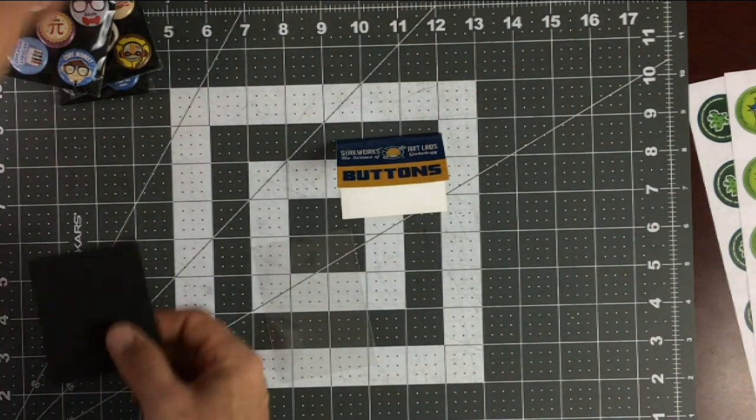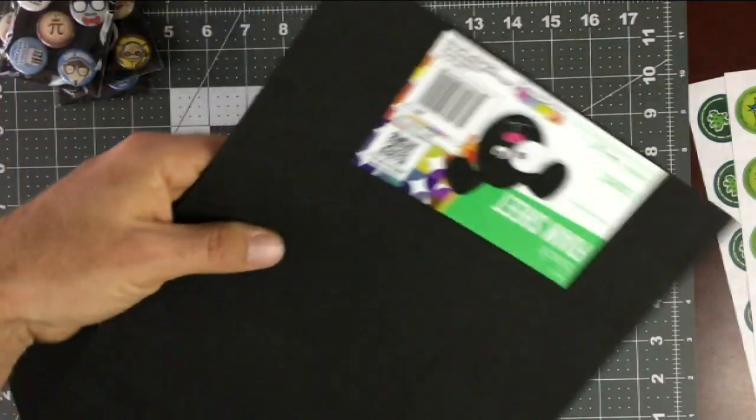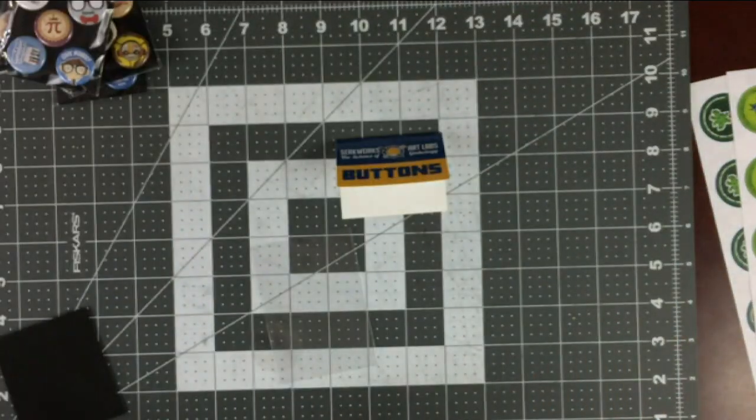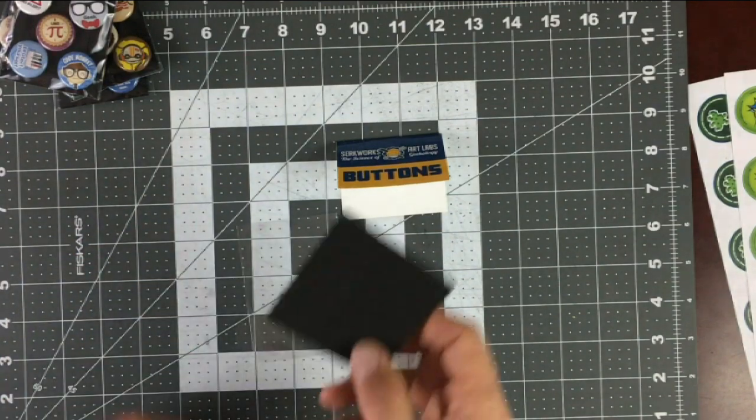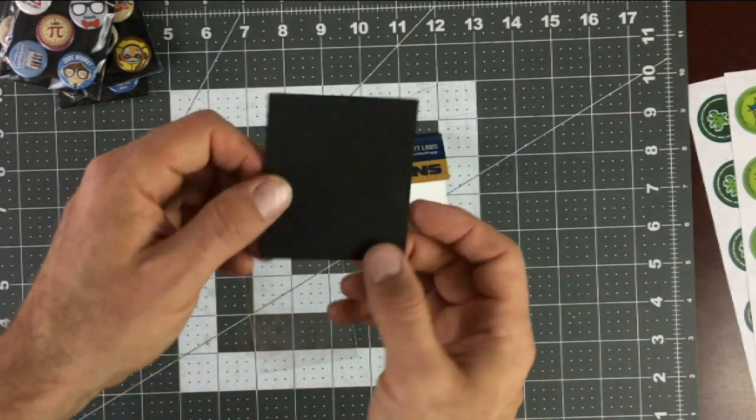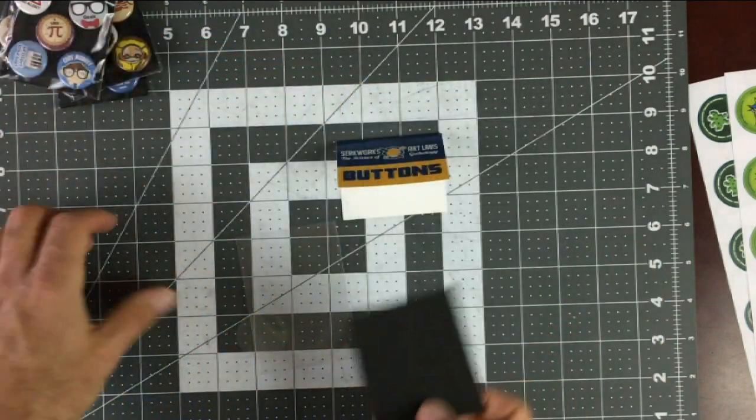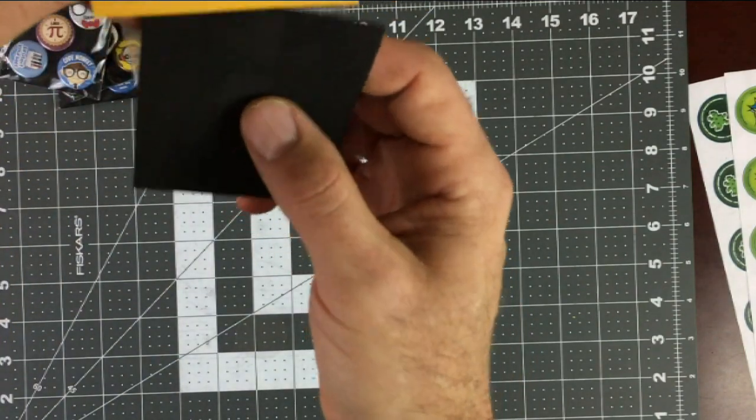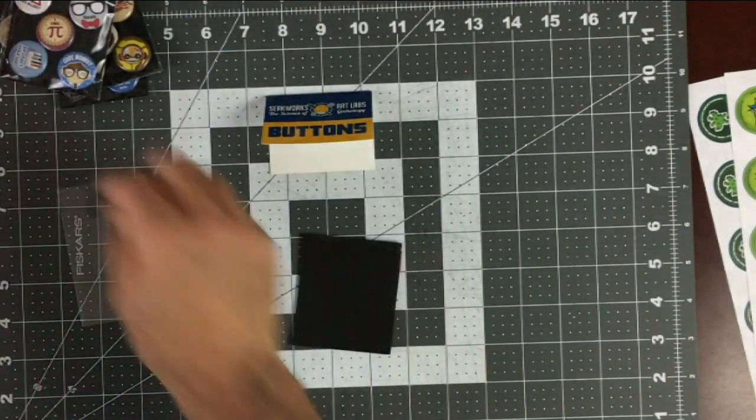And then I get some of this stuff, this craft foam. And you can find this pretty much anywhere as well. It's just that foamy stuff, foamy craft stuff. That's why it's called craft foam. And then what I do is I cut these down to, I think it's two and a half by three inches. So those pieces and that will fit nicely in here. And it's just kind of the perfect size.